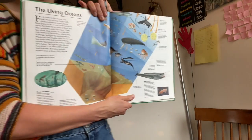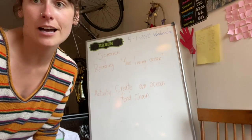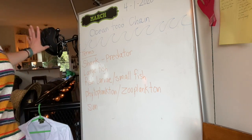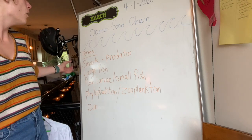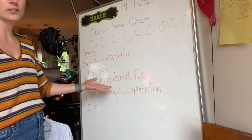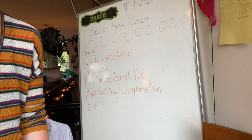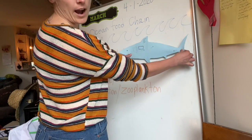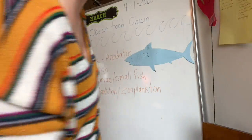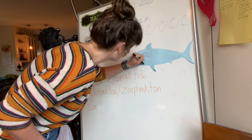And that is basically what we're reading today — the living ocean. What we're going to do is create our own food chain. For our ocean food chain, we're going to look at a few terms we're going to use in this project. We have to have a predator, so I'm going to use a shark. It's got to eat something, so we're going to have some large fish, then fish larvae and small fish, phytoplankton and zooplankton, and the sun. So I created a shark for our ocean food chain. We know that our shark is a predator.